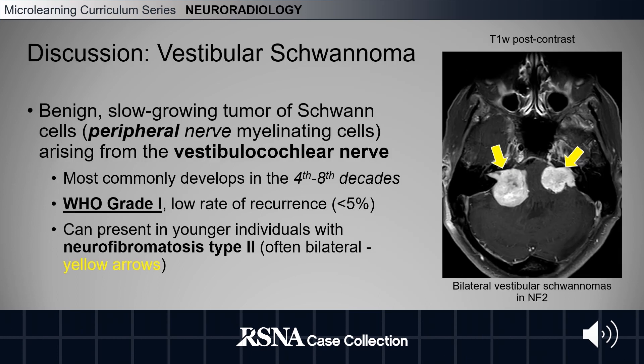Vestibular schwannomas are benign, slow-growing tumors of Schwann cells, which are peripheral nerve myelinating cells, and they typically arise from the vestibulocochlear nerve. They most commonly develop in the fourth through eighth decades of life, and they bring a good prognosis as a WHO grade one tumor with a low rate of recurrence.